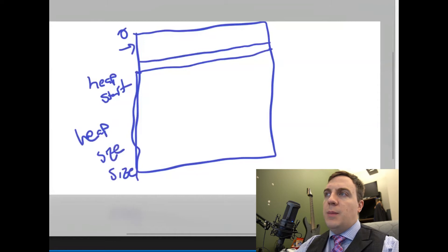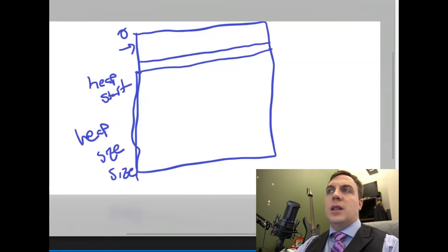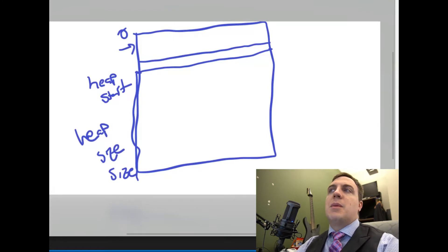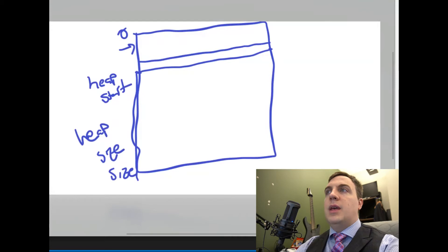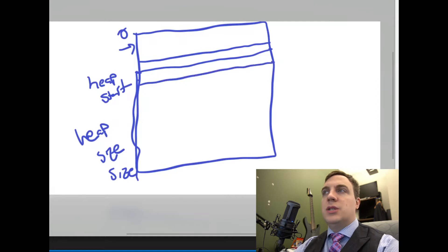Now we know how much of this memory is free, how much has not been taken up. If you look at the linker script, we gave it 128 megabytes. That's not a lot of memory, but it gives us enough for whatever operating system we're going to build. At heap_start, the very top starts with an 8-bit descriptor called the page descriptor.